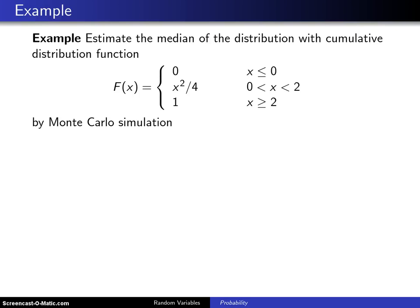As an illustration of random variant generation, consider the following example. Estimate the population median of the distribution with cumulative distribution function F equals 0 for x less than or equal to 0,